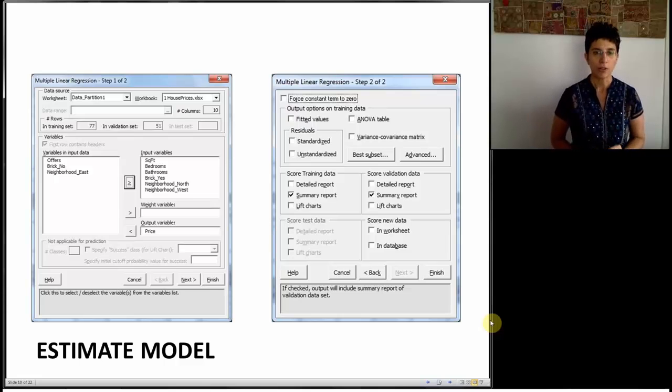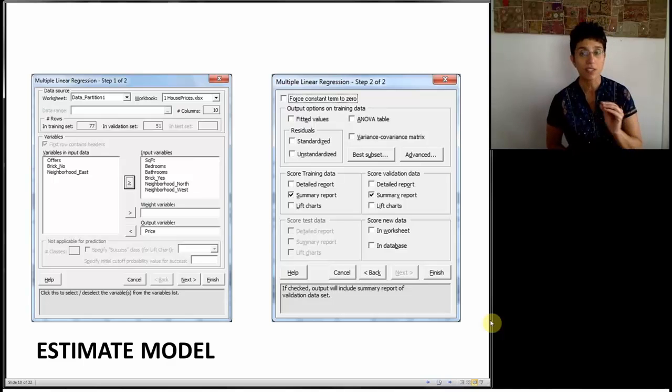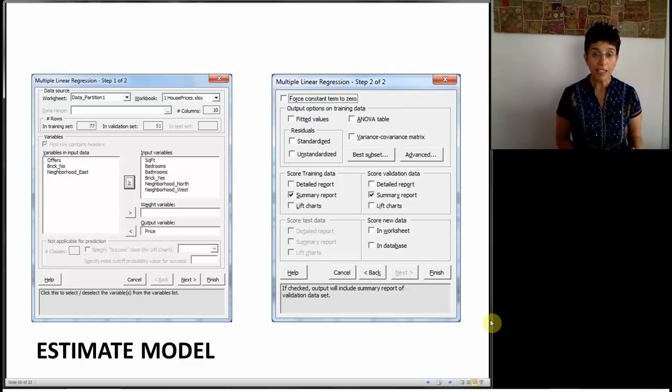You'll also notice now that in this little menu we have two options, or actually three. Score training data means it's going to give us statistics based on deploying the model to the training set. Then we have score validation data right next to it, which is going to give us separate statistics on the holdout, this drawer data. And finally, you can even score a new set of data, this is the deployment stage, by supplying a different worksheet or even deploying this to a whole database.